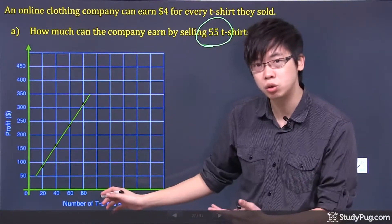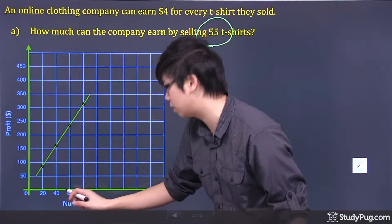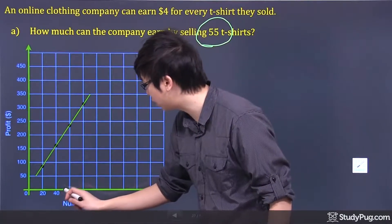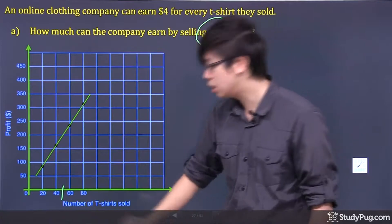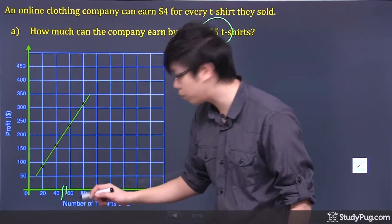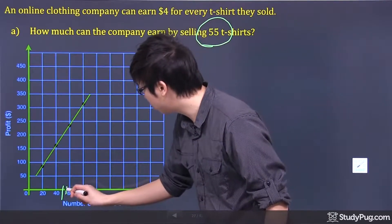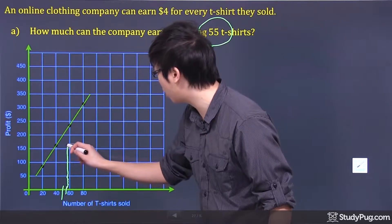So you go down right here, which is where the t-shirts are. You go, okay, it's kind of hard to figure out what the 55 is, but halfway of that is 50. Maybe another half will be 55, approximately. So if you're just going to do like a line going up and